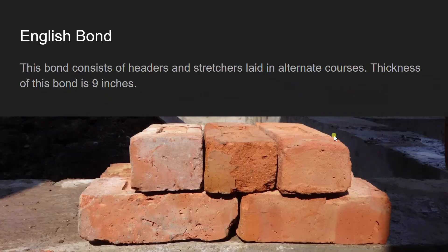Next is English bond. This bond consists of headers and stretchers laid in alternate courses. The thickness of this bond is due to the header bond, that is 9 inches.